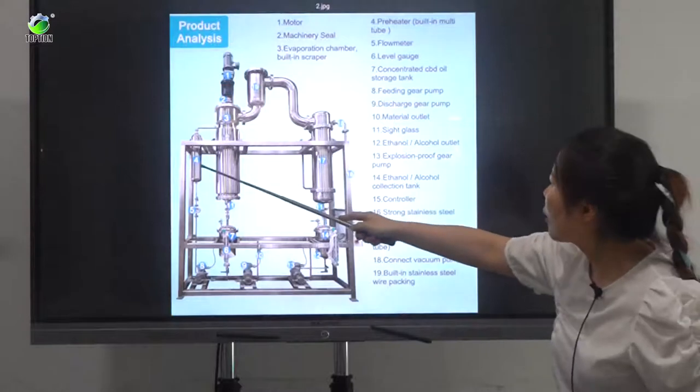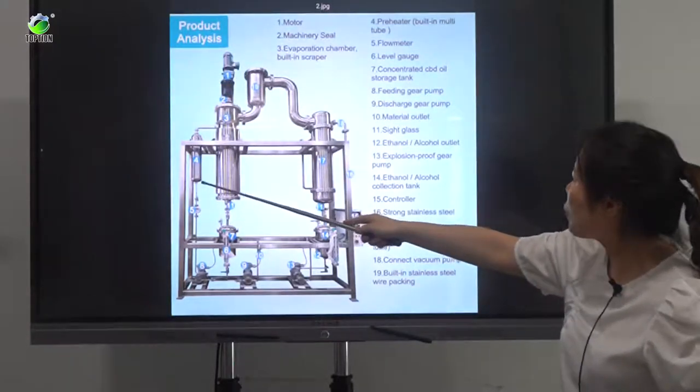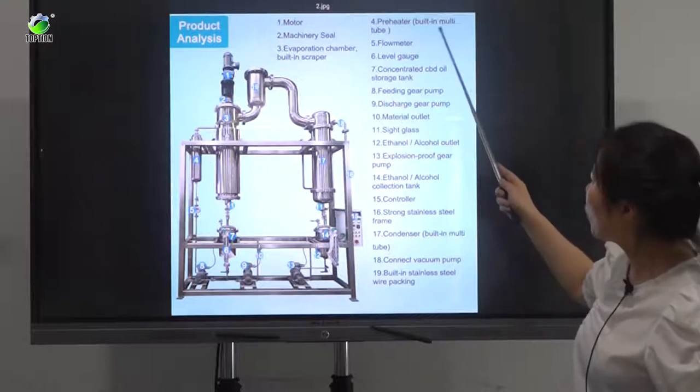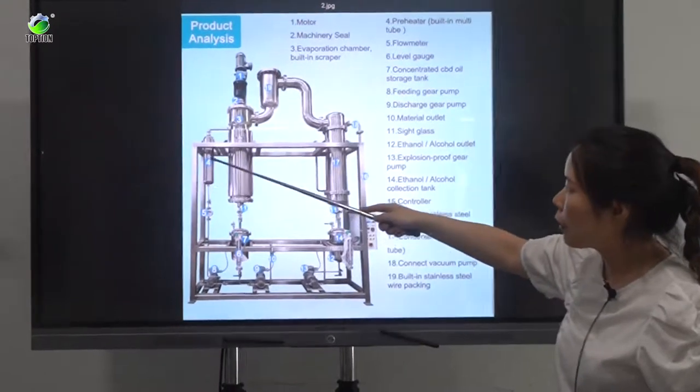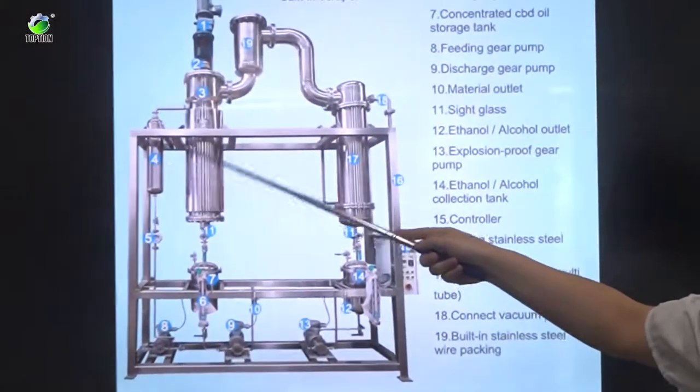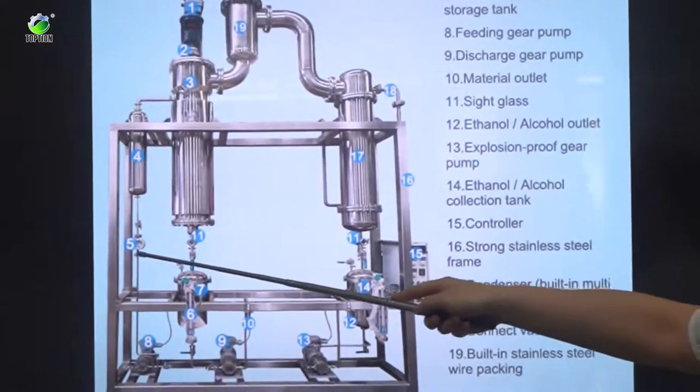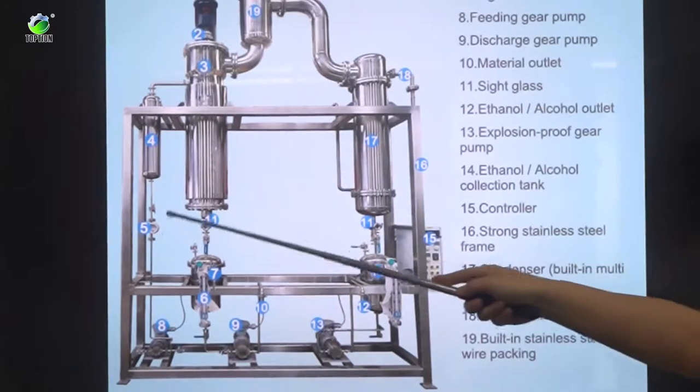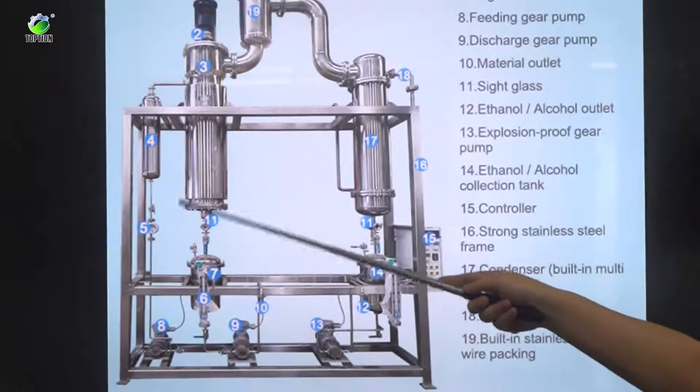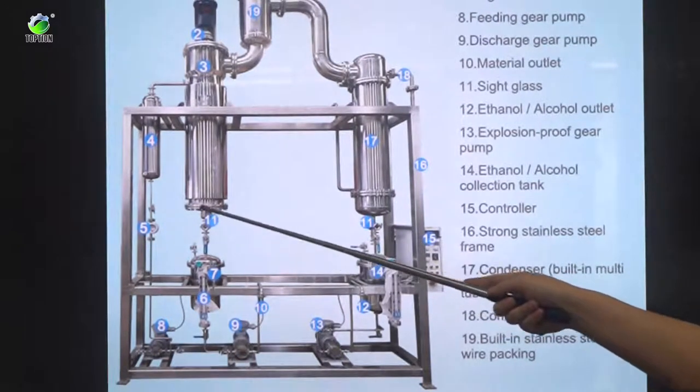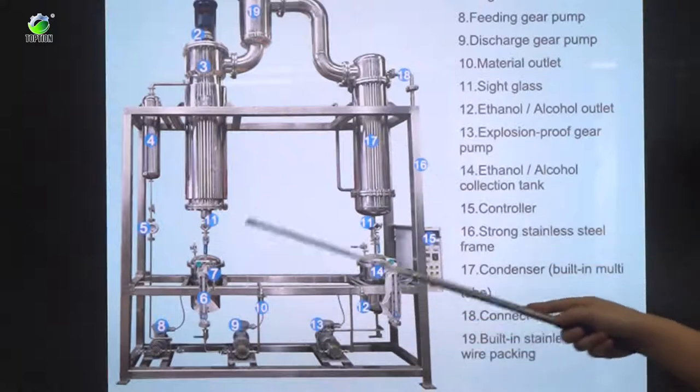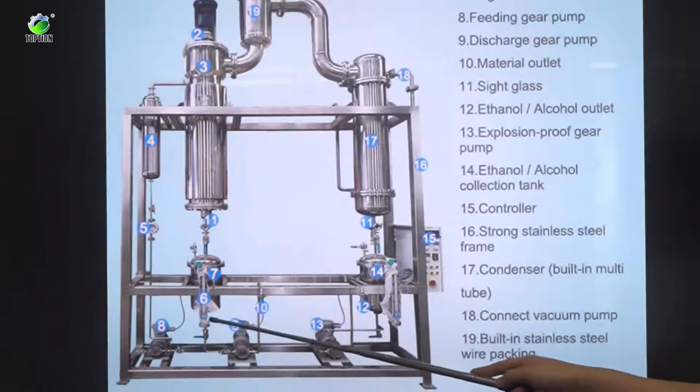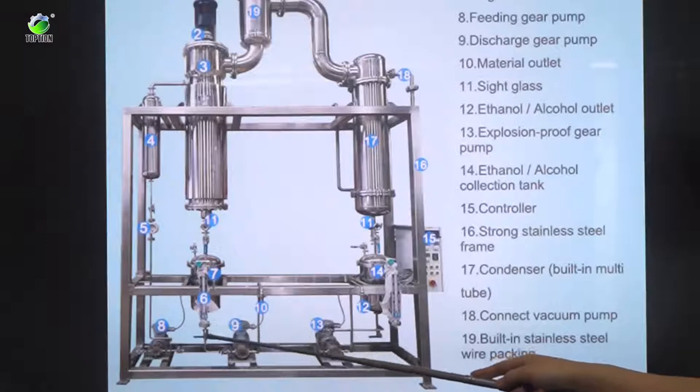And this fourth is pre-heater. With this pre-heater we built in multi-tubes here to heat the material. And this fifth part is a flow meter. From this flow meter you can see the liquid value. And the sixth one is level gauge.